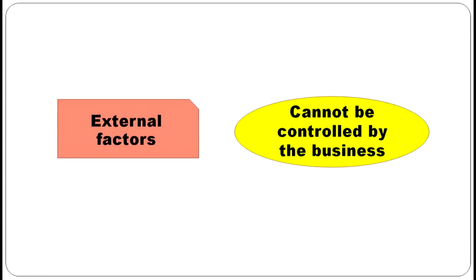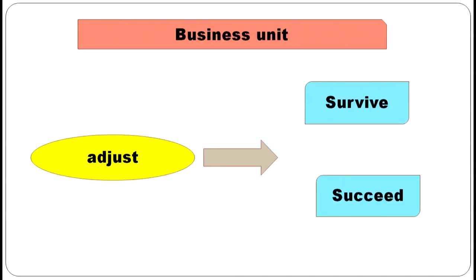In business, we have external factors which cannot be controlled by the business. Usually, the business unit adjusts with the environment in order to survive and in order to succeed in the business field.